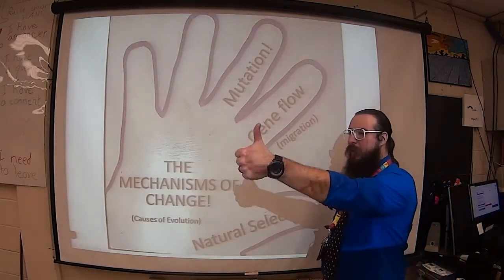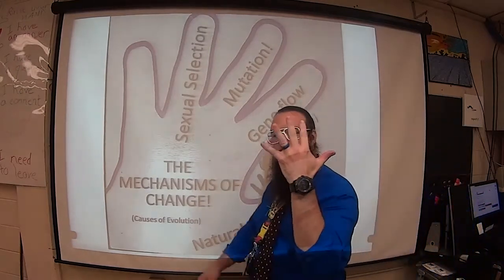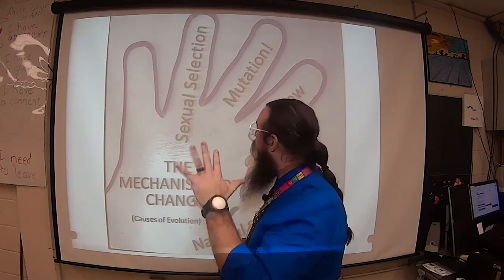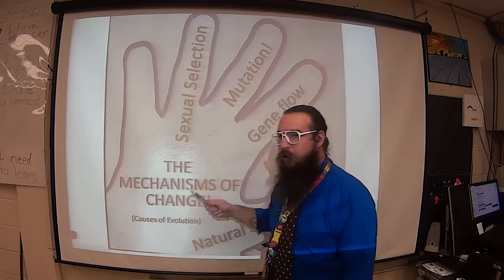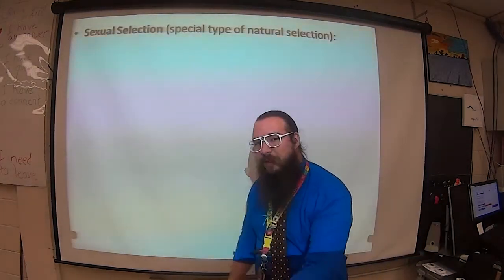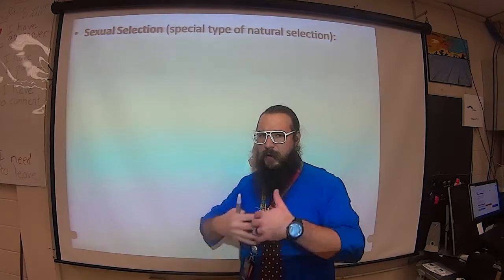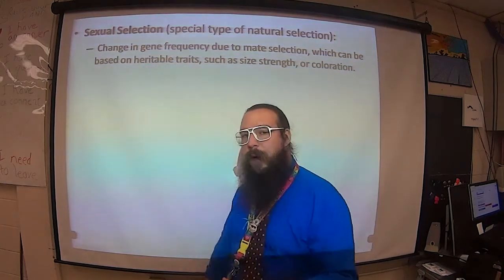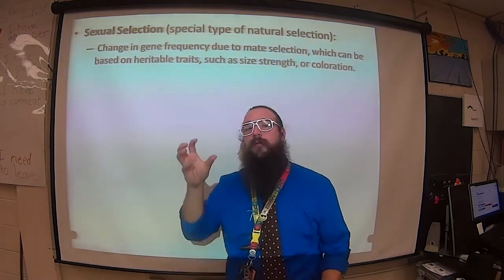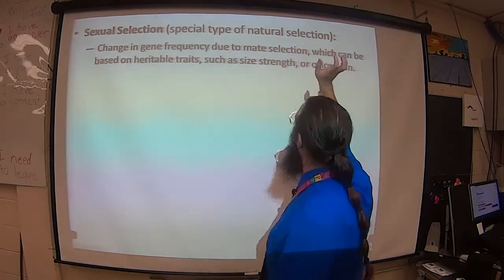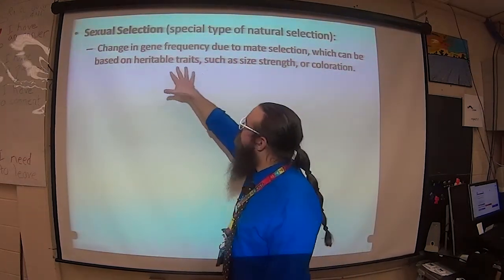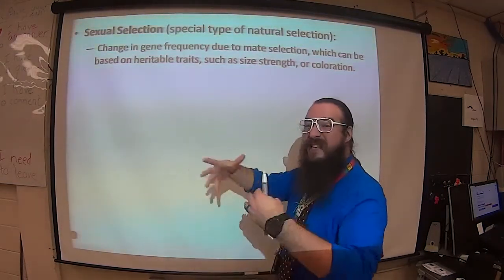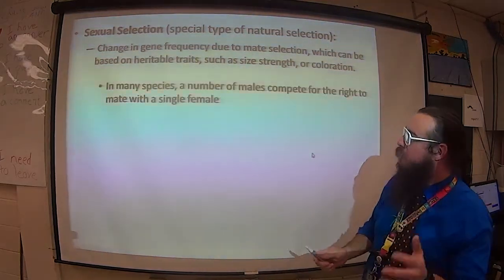On the ring finger — because that's how we show we belong to spouses — is sexual selection. Sexual selection is a specific type of natural selection where nature is still making a selection, but it's all about reproduction. If we're looking at an asexual population, there is no sexual selection; this is only for sexual reproduction. It involves changing the gene frequency due to mate selection, which could be based on heritable traits or just traits individuals find desirable — usually size, strength, coloration, things like that.